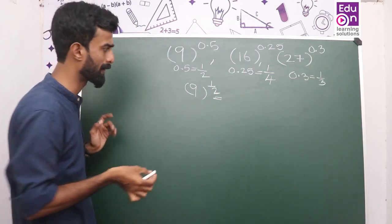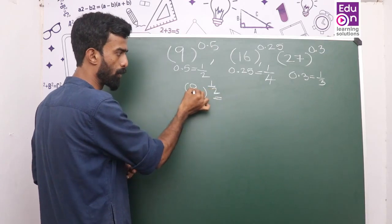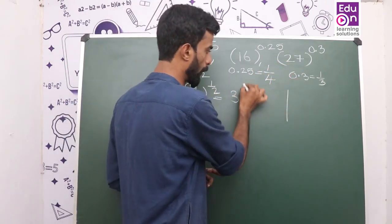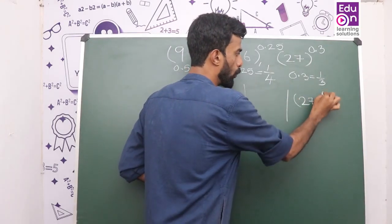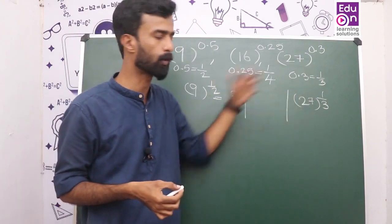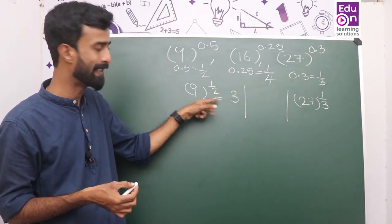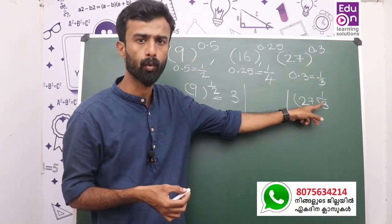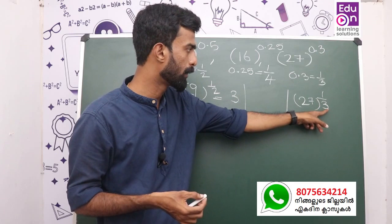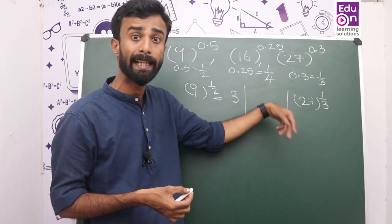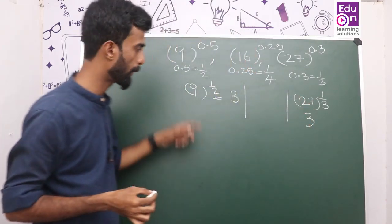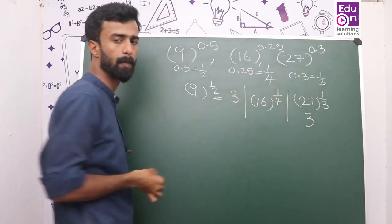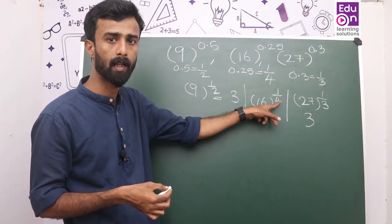0.5 — we will connect 0.5 to 1 by 2. We will connect 0.25 to 1 by 4. We will learn 1 by 3 equals 0.3. Square root, cube root of 1 by 3. 16 to the power 1 by 2, 1 by 4 — this logic.